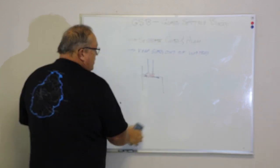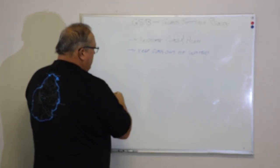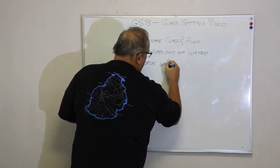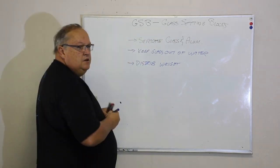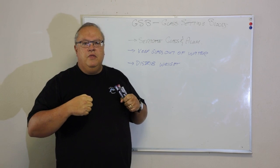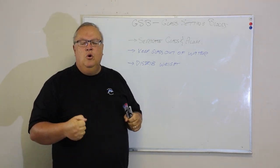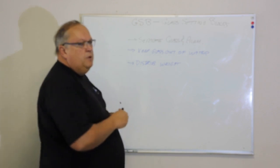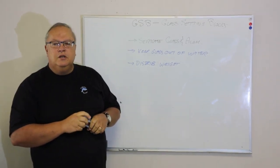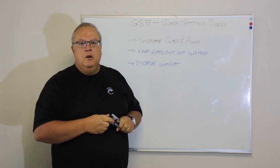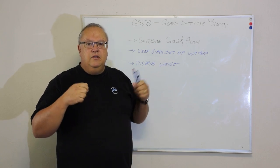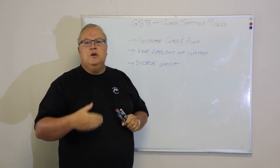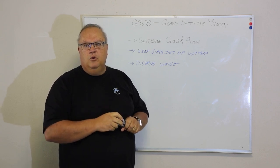And the third function for the glass setting block is to distribute the weight of the glass onto the correct part of that frame, or that sash, or that door, or whatever it is that you are glazing. And although these two functions, the first two functions are important, this last one is probably the most important. And it's probably the one that causes the most problems in the industry. Because people don't understand this. They either do not put in glass sitting blocks at all, or they put the glass sitting blocks in the wrong location, and then they can't understand why the door sags and starts scraping on the floor tiles below.